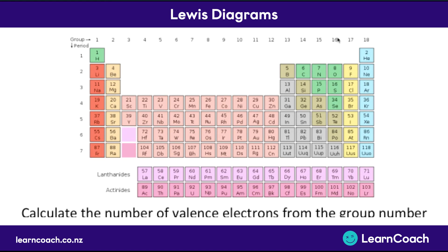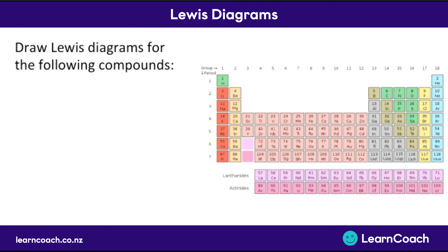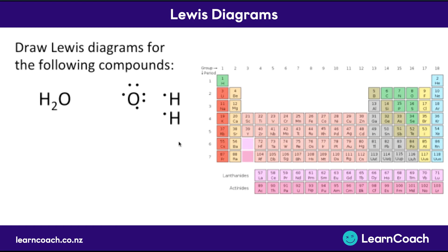So if we want to draw Lewis diagrams for some compounds, let's start with H2O. We draw each of the atoms separately. Oxygen is in group 16, so it has six outer electrons. Hydrogen is in group one, so it has one outer electron, and we have two hydrogens here. Oxygen wants to get to eight, and each hydrogen wants to get to two, so they can share. Here we have H2O, and all atoms have full outer shells.